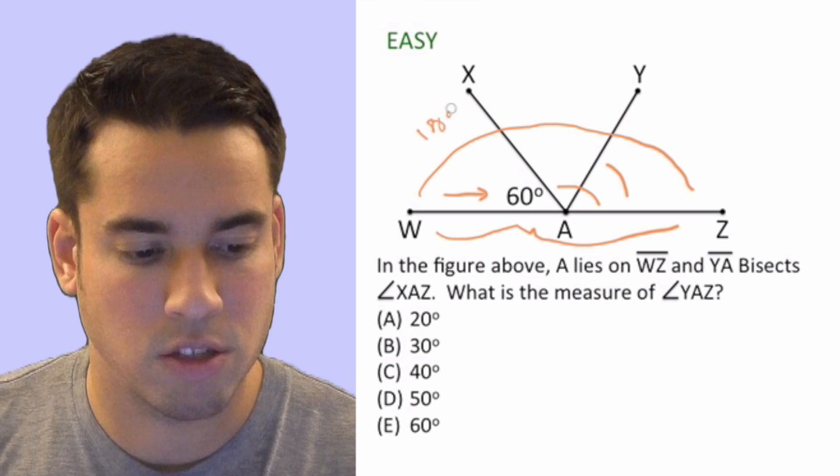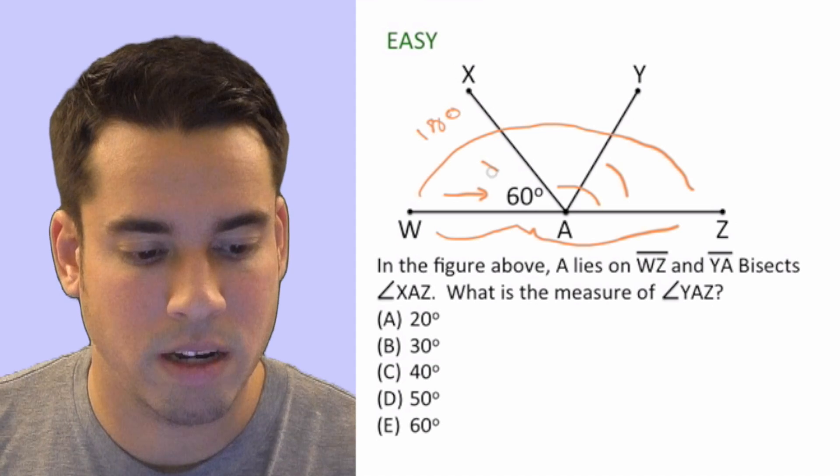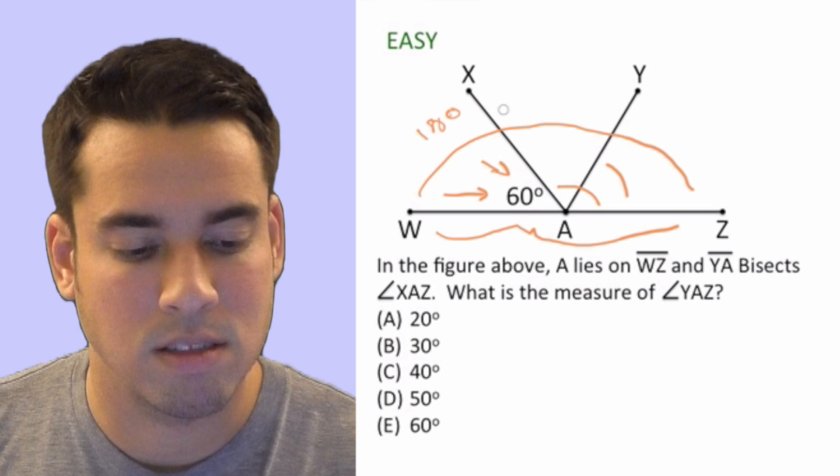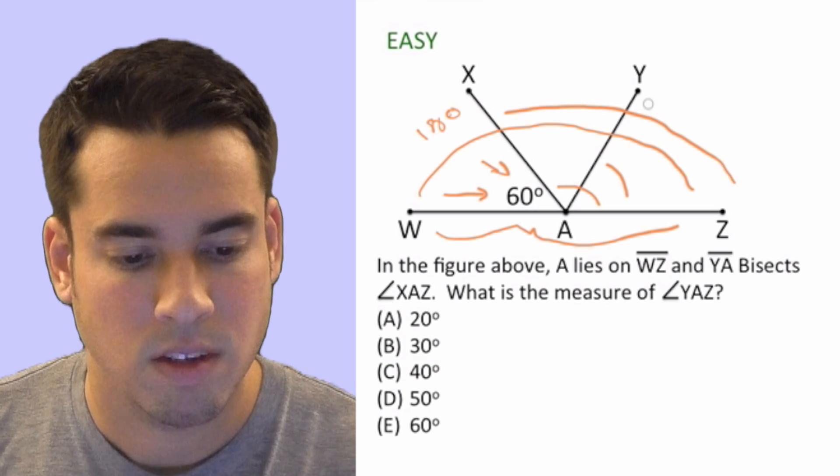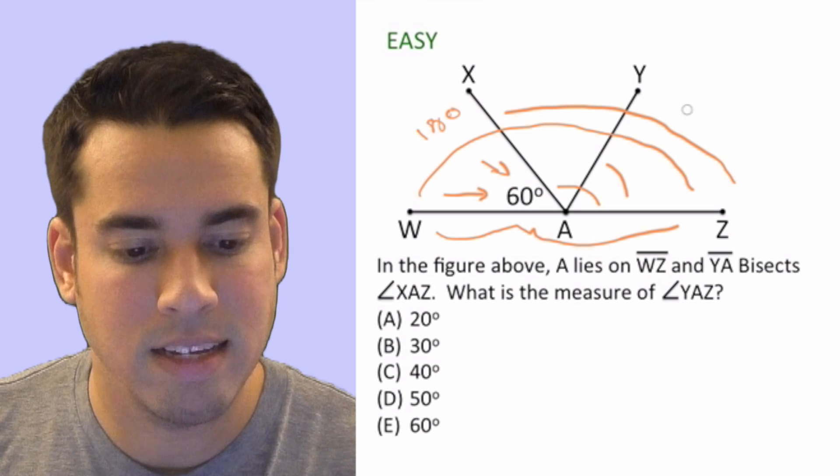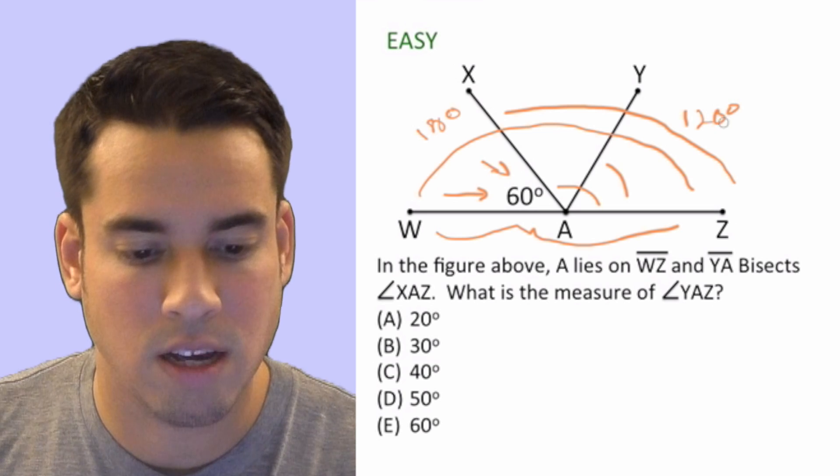Okay, so let's start there. We know this whole thing across is 180. We also know that this guy is 60 degrees. That means that this whole segment, XAZ, is 120 degrees.